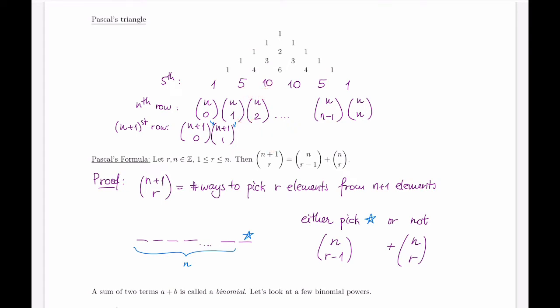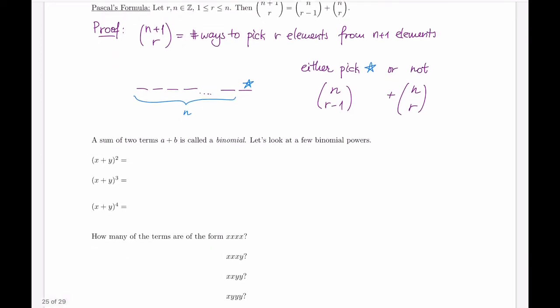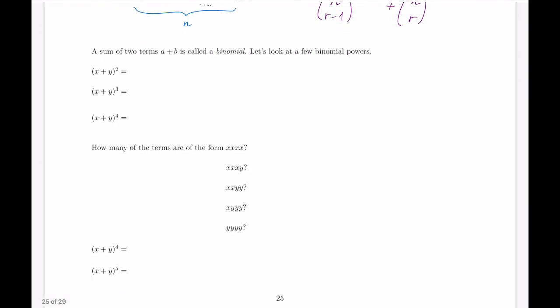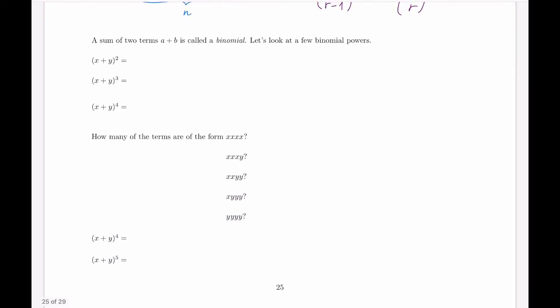Why is this useful? It has a direct connection to what we call binomial coefficients. The sum of two terms, a plus b, is called a binomial — bi-nomial because there are two of them. Let's take a look at a few powers of binomials.